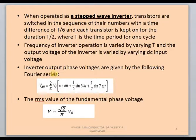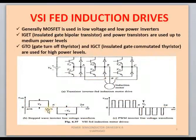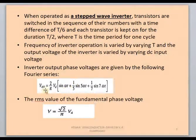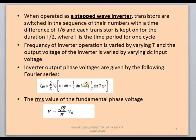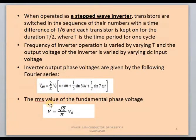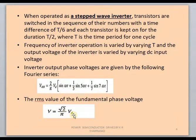The frequency of the output voltage is varied by varying the switches. The output phase voltage of the square wave inverter is: V_an = (2/π) × V_d × [sin(ωt) + sin(5ωt)/5 + sin(7ωt)/7 + ...], where the 5th and 7th are harmonic components and sin(ωt) is the fundamental component. When calculating torque generation, you consider the fundamental component. The RMS value of the fundamental phase voltage is (√2/π) × V_d, so by changing V_d we can change the voltage value.